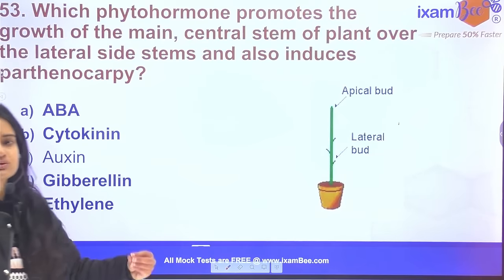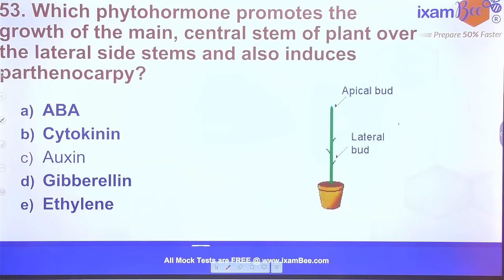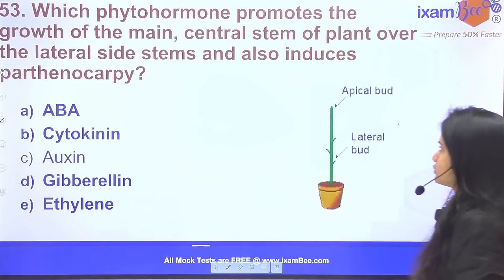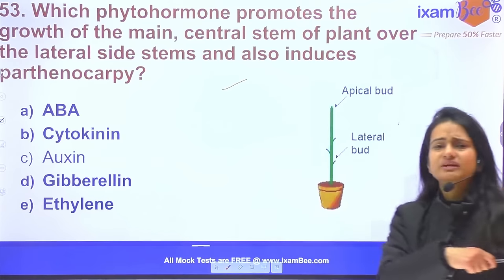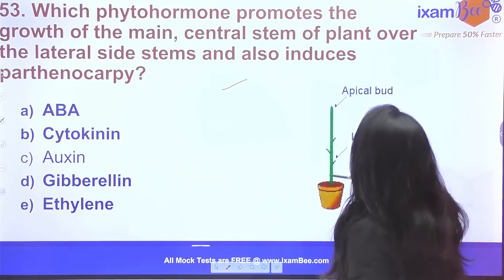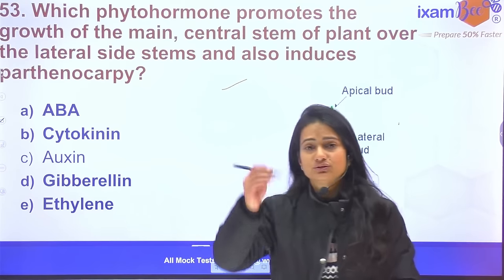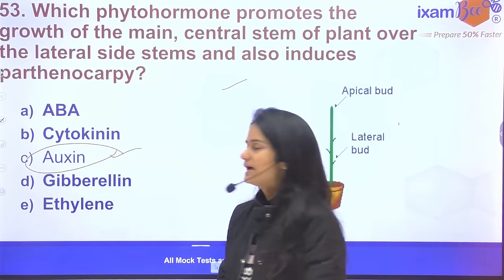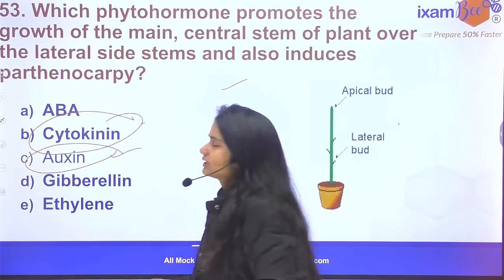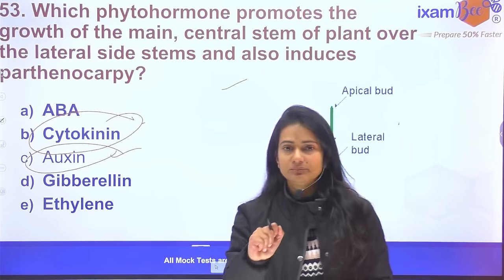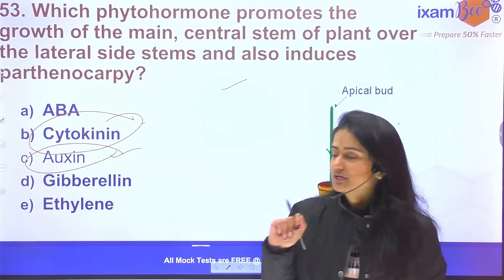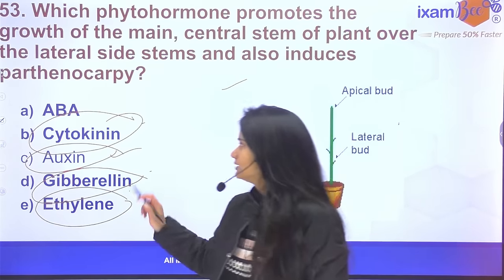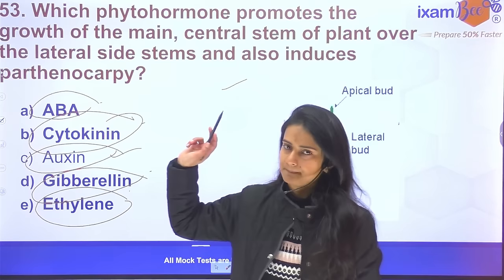Question 53: Which phytohormone promotes growth of the main central stem over lateral stems (apical dominance)? Auxin promotes apical growth. Cytokinin promotes lateral growth. Gibberellin is used to overcome dwarfness. Ethylene is used for ripening, and ABA is the stress hormone.